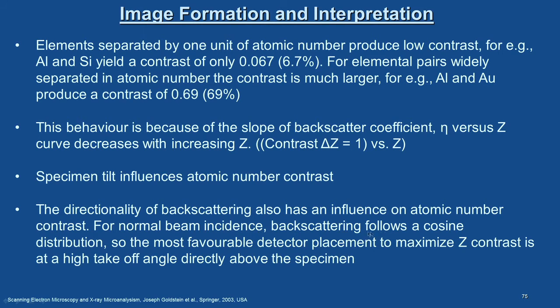For normal beam incidence, backscattering follows a cosine distribution. The most favourable detector placement to maximize Z contrast is at a high takeoff angle directly above the specimen. If you recall the instrumentation details from the lab, the BSE detector is placed just above the specimen, fixed just below the pole piece. That is the position where BSE signals are very well collected. BSE electrons are very high energy electrons, and their trajectories are straight lines compared to the trajectories of low-energy secondary electrons.